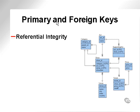Primary and foreign key constraints are used to validate the referential integrity of a database. What is referential integrity? Referential integrity is the validity or correctness of the relationships between the primary and foreign keys.